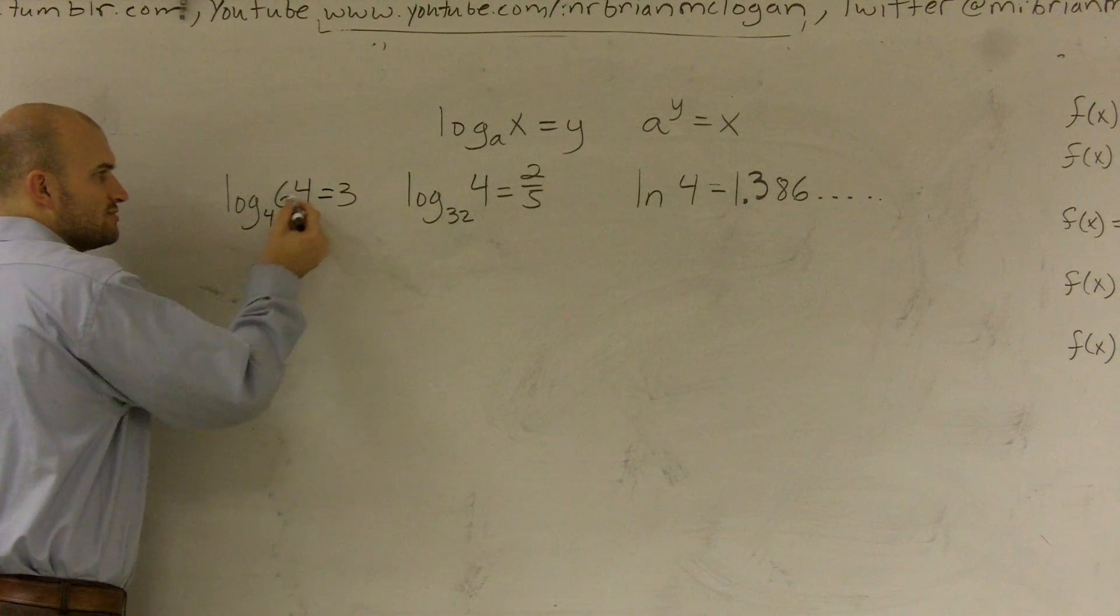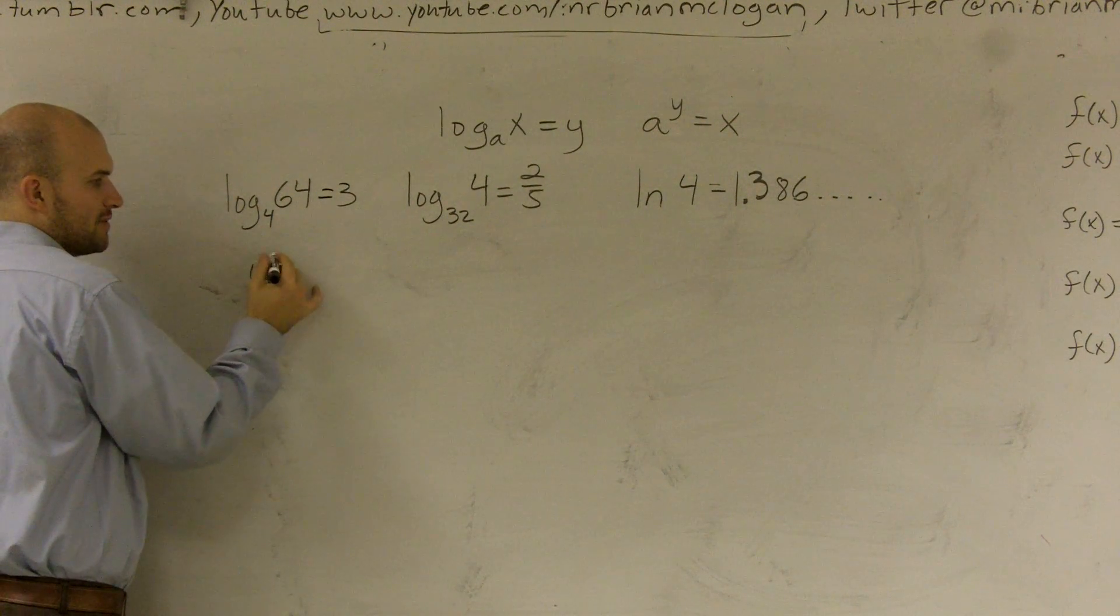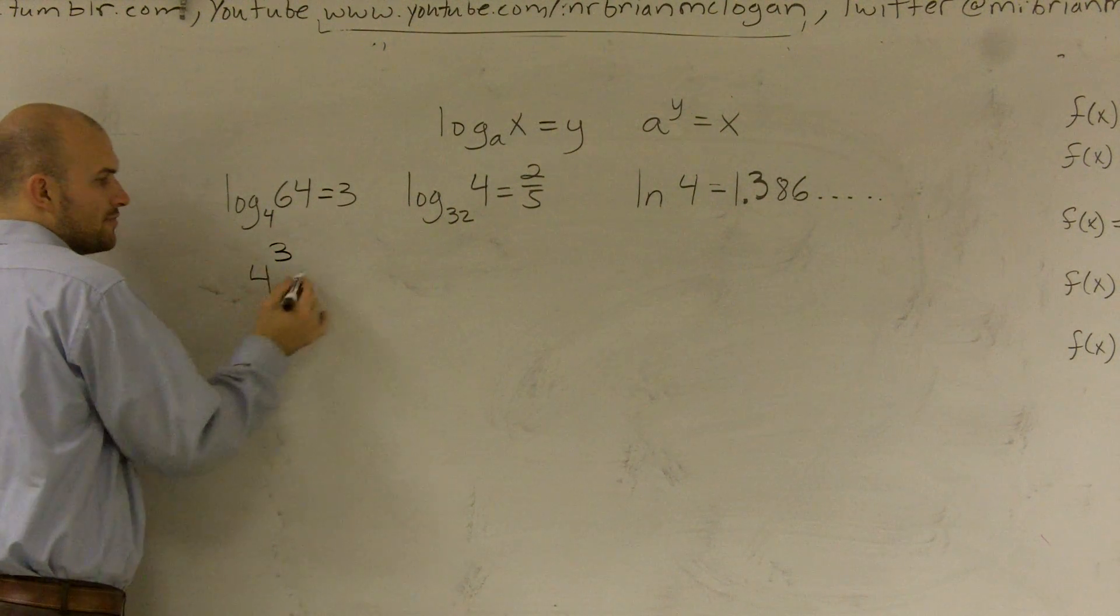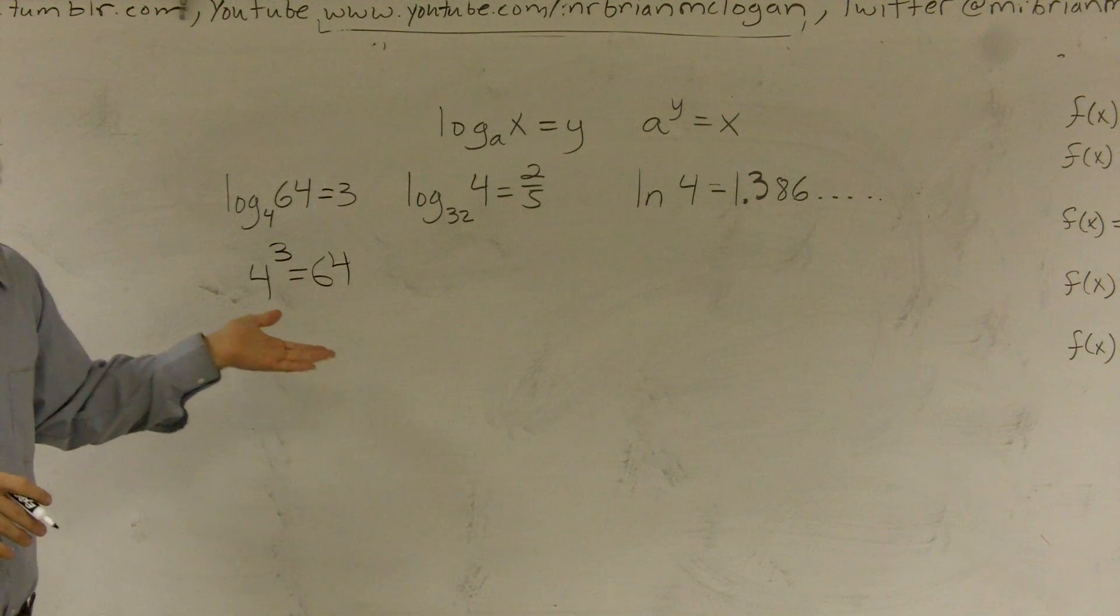Now, remember, it's 4 raised to some number equals 63. Well, that number is what 3 is. 4 raised to the third power equals 64. So that is an exponential form.